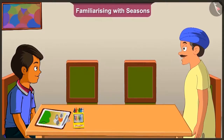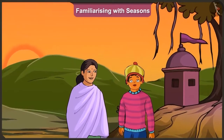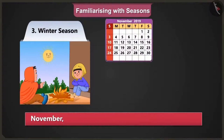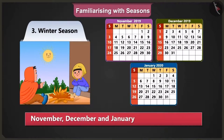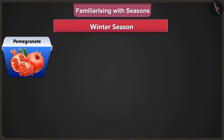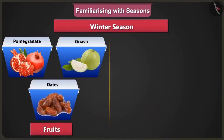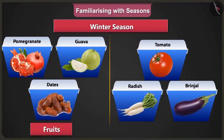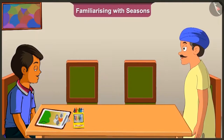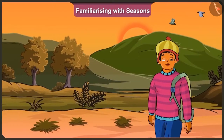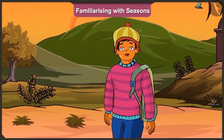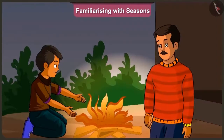After the monsoon season comes the cold season, means winter. To protect me from cold, mother makes me wear woolen clothes. November, December, January are the months of winter. In these months, pomegranate, guava, dates are the fruits. And tomato, radish, brinjal are the vegetables. Uncle, in this season, my teeth chatter due to cold while going to school in the morning. And at night, my father makes me sit near the fire to protect me from cold.